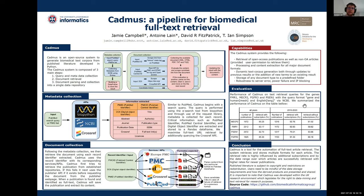When looking at open access only, the retrieval rate is about 59%. In conclusion, Cadmus is a tool for the automation of full-text article retrieval. The system retrieves and stores multiple format types for each article, and the retrieval rate is influenced by subscription status and tends to be higher for newer publications. It is important to note that published literature is subject to copyright, so one needs to be mindful about redistribution and how to present one's work. Cadmus has been developed within the UK research environment, which legislates for the right to data mining and text retrieval for research purposes.